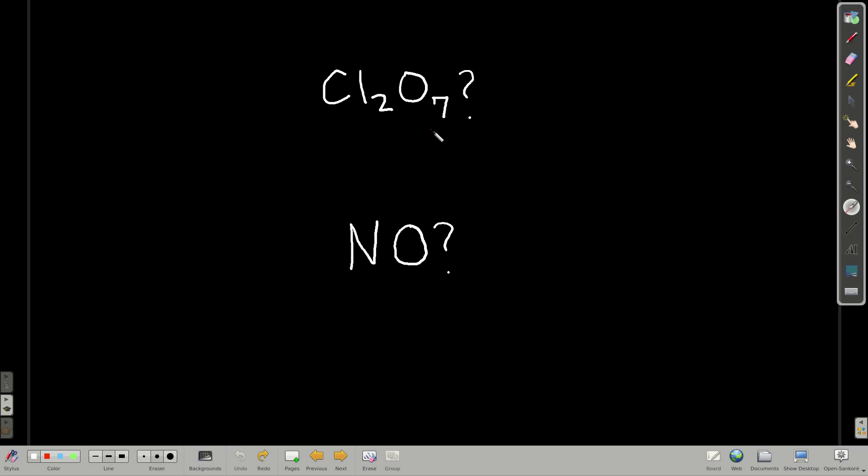Now let's put it into practice. How do we name these two molecules? Notice that this one contains chlorine and oxygen, which are both non-metals. This one contains nitrogen and oxygen, which are both non-metals. Pause for a second and see if you can name them.